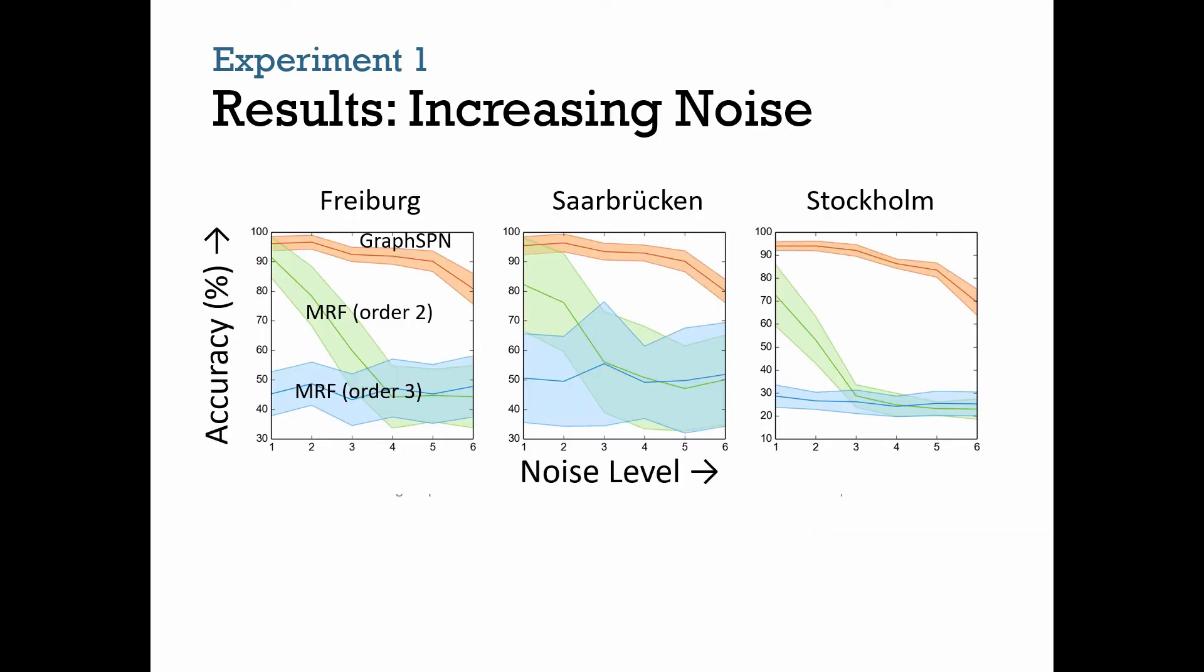These graphs show classification rates for semantic attributes over places in the entire graph versus strength of noise applied to the local evidence. We see that Graph SPN is much more resilient to increasing noise compared to traditional Markov Random Fields whose performance drops rapidly. Moreover, the accuracy of Graph SPN is mostly above 80%, indicating actual correction of noisy local evidence.